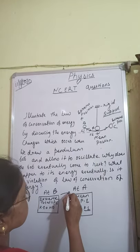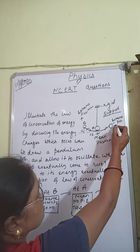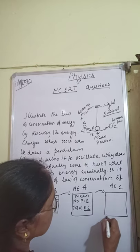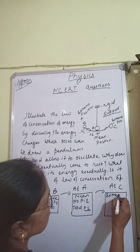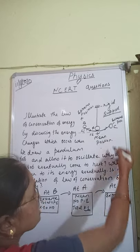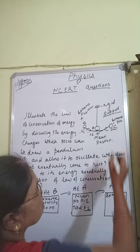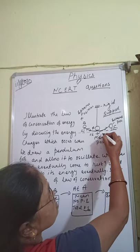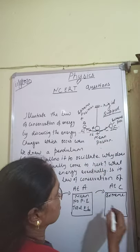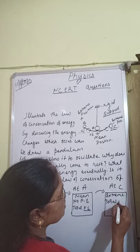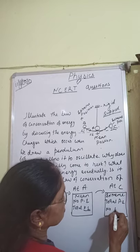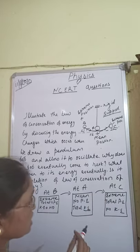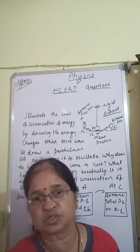When the bob moves from A to C, at C which is also an extreme position, there is again some height. All the kinetic energy changes back to potential energy when it reaches C. So at C there is total potential energy and no kinetic energy. In the whole movement, potential energy is changing into kinetic energy and kinetic energy is changing into potential energy.